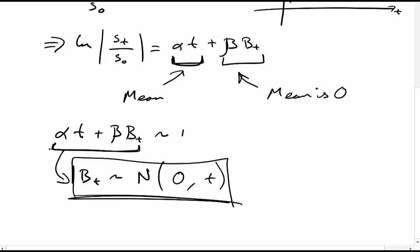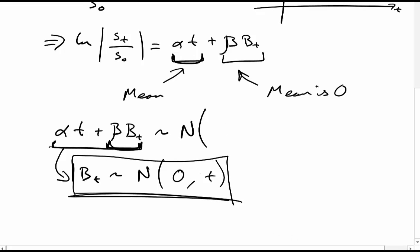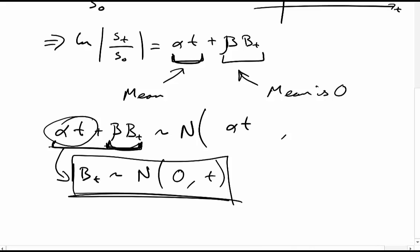So it's going to be normally distributed. This term tells me the mean is going to be zero because it's standard Brownian motion. But I'm adding alpha t to that, so the mean becomes zero plus alpha t, which is alpha t. And for the variance — adding alpha t is not going to make a huge difference because variance is just the amount of spread. The alpha t is just translating my terms; it's not going to affect my spread.